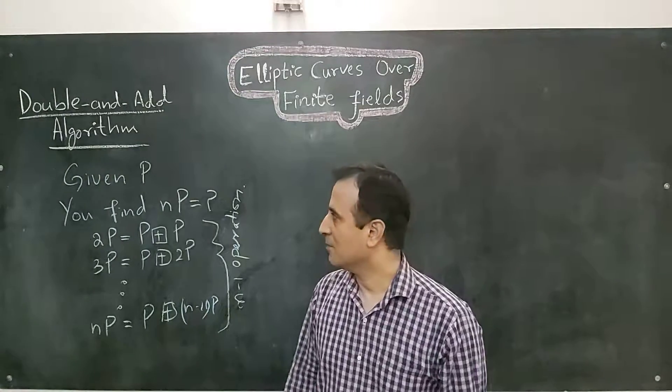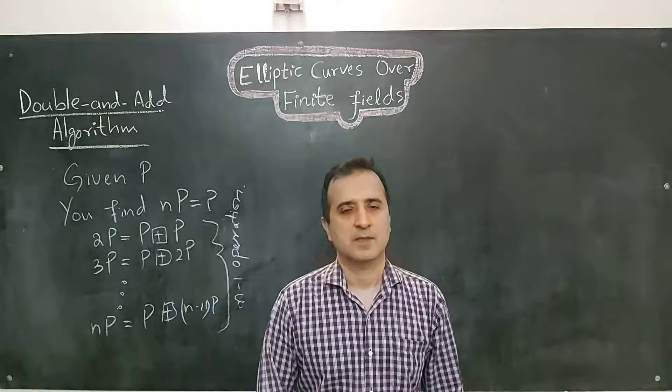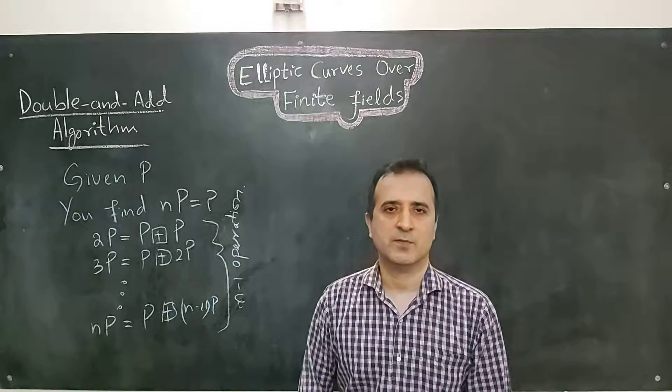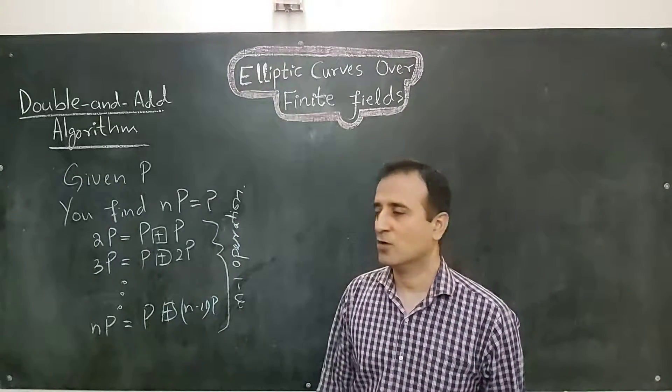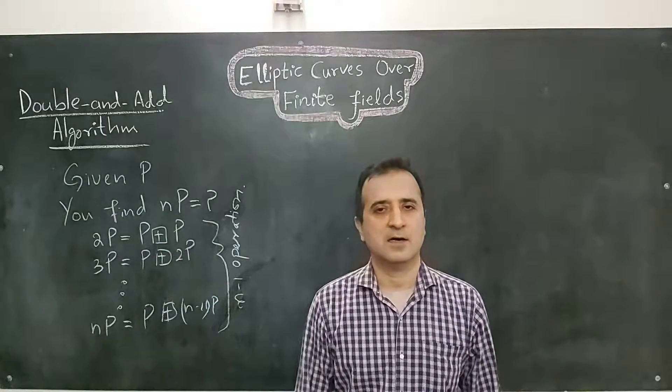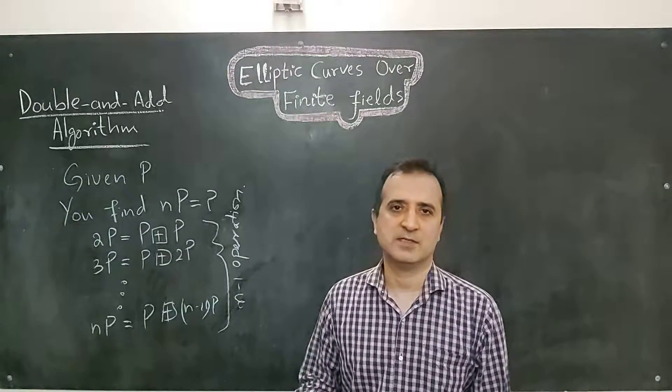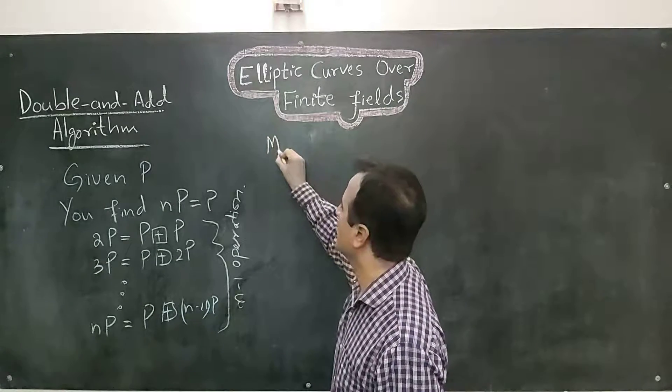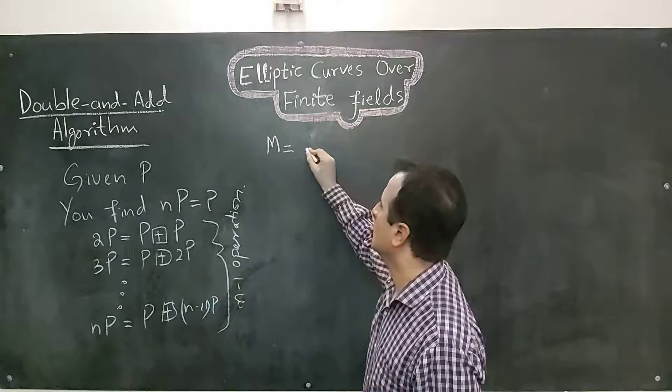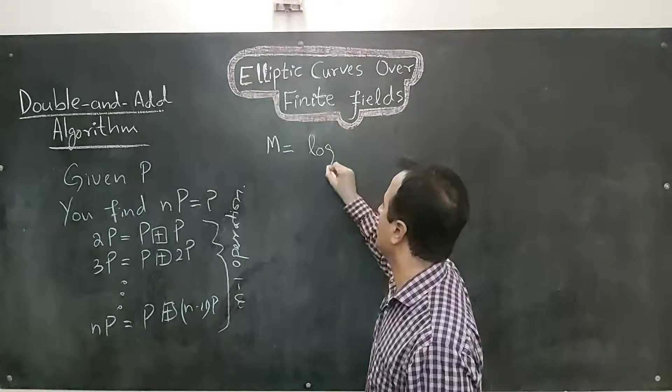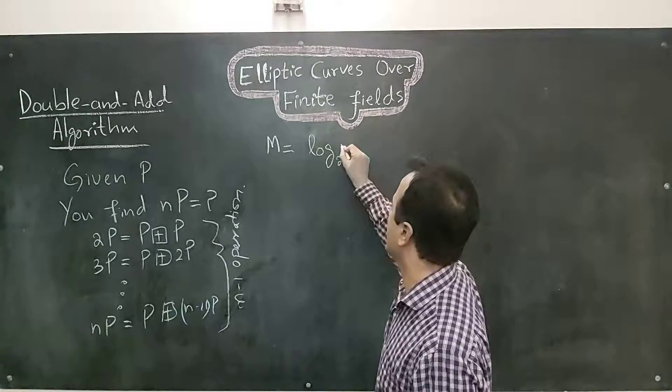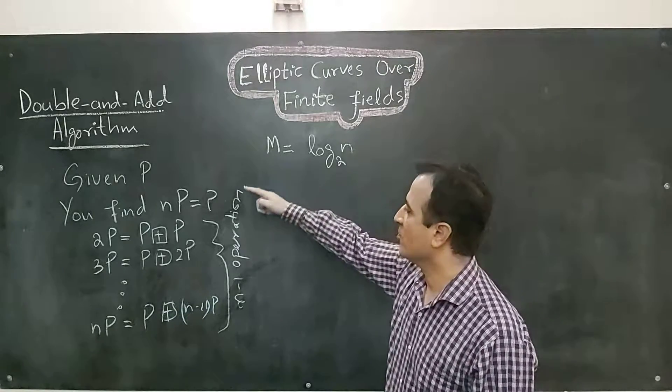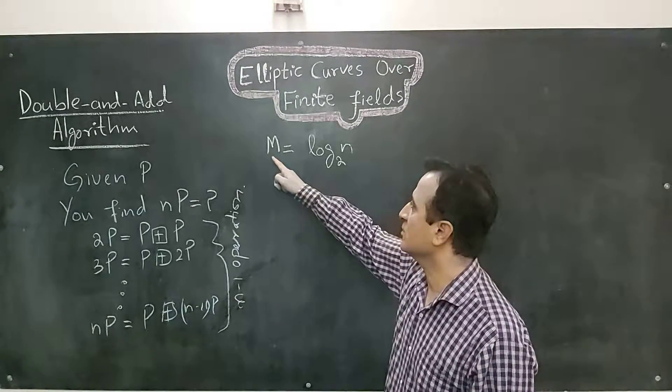Let's compute the time complexity of this naive algorithm. Time complexity is computed based upon the size of input, and size of input is not N. It is the number of bits required to express N. So we can say the size of input is M where M is equal to log base 2 of N. Now we have to express our number of operations with respect to the size of input.